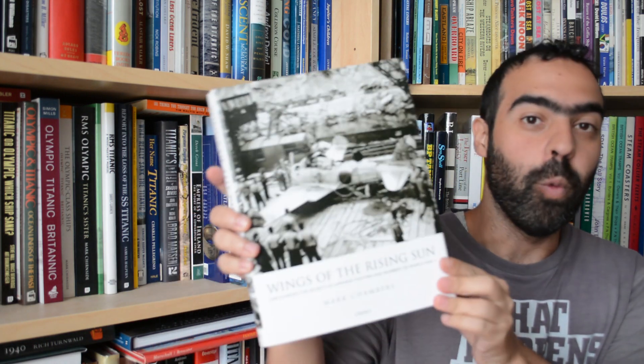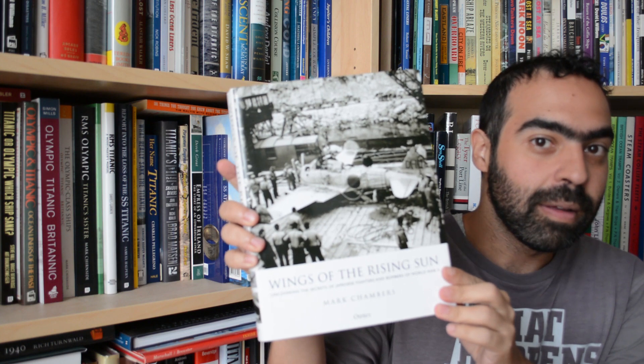Hello everyone! Today we're going to be checking out Wings of the Rising Sun by Mark Chambers. The subtitle for this book is Uncovering the Secrets of Japanese Fighters and Bombers of World War II.